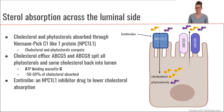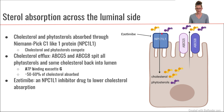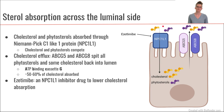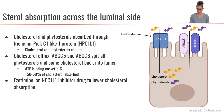Let's talk about how we absorb sterols across the luminal side. We have a few important transporter proteins. The first is called Niemann-Pick C1-like-1 protein — NPC1L1. NPC1L1 lives on the luminal side of the enterocyte and allows us to absorb cholesterol across the luminal side. Phytosterols, which are the sterols we get from plant foods, can also be absorbed through NPC1L1. Interestingly, cholesterol and phytosterols can compete with each other for absorption through NPC1L1.